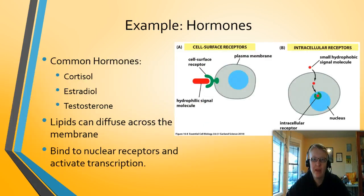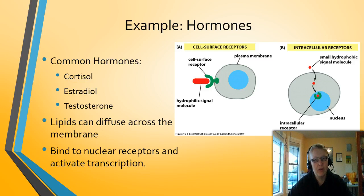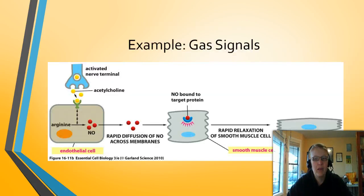Now, while we've been talking about cell surface receptors, hormones are a slightly different case. Many hormones are lipids, which means they can diffuse across the membrane easily and don't need a cell surface receptor. Instead, they use intracellular receptors called nuclear receptors. These nuclear receptors bind to the signal and automatically start transcription — that's why they're called nuclear receptors. So lipid-based hormones can pass through the membrane without binding to the cell surface and will stimulate transcription within the cell.